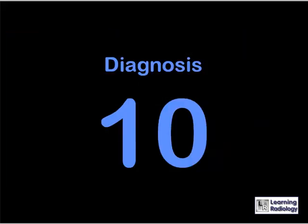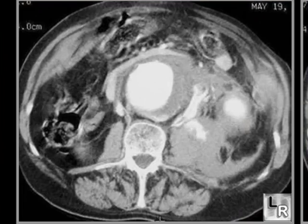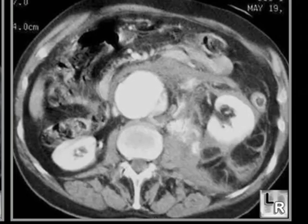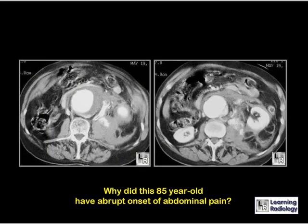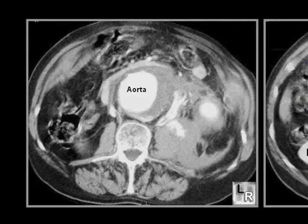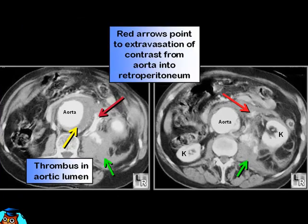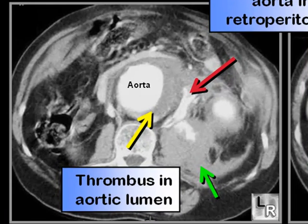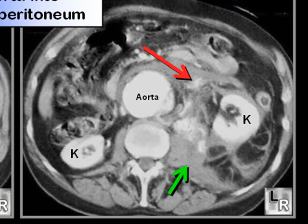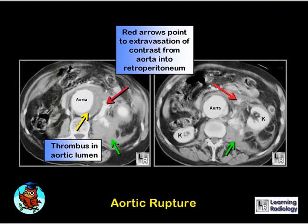Why did this 85-year-old have an abrupt onset of abdominal pain? On two contrast-enhanced CT images of the abdomen, there is thrombus separating the contrast in the aorta from the aortic wall. More critically, the red arrows point to contrast that has actively extravasated from the aorta into the retroperitoneum. The green arrows point to less acute blood, which is less dense on CT. This is an example of rupture of the abdominal aorta, and this patient did not do well.